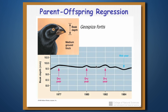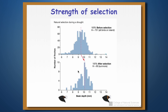Now let's think about the second method: parent-offspring regression. We've already seen that Geospiza fortis has undergone various selection regimens during dry years. To figure out the strength of the response to selection, we go into the population, mark all individuals, identify who the parents of certain offspring are, measure the trait in both parents and offspring, and fit a line to get a slope.